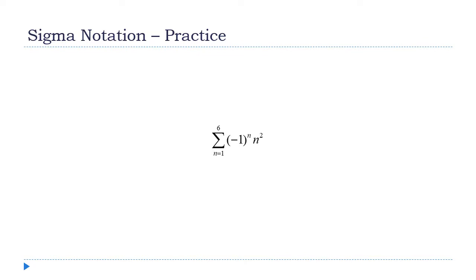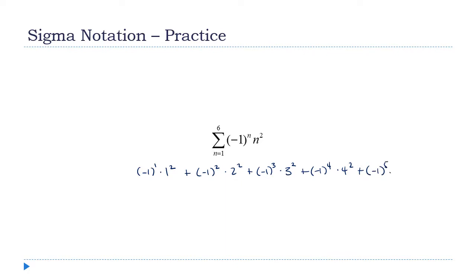Let me give you one to try. Starting with n equal to one, this is (-1)^1 times 1² plus (-1)² times 2² plus (-1)^3 times 3² plus (-1)^4 times 4² plus (-1)^5 times 5² plus (-1)^6 times 6². So what we get is: -1 + 4 - 9 + 16 - 25 + 36, which comes out to 21.